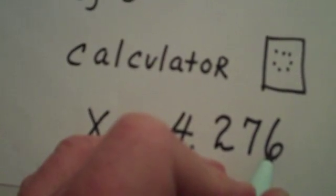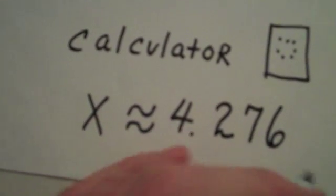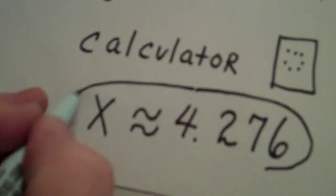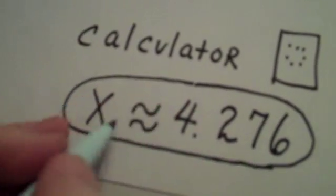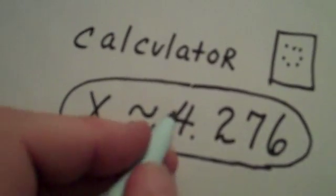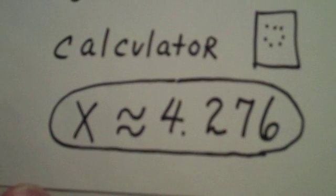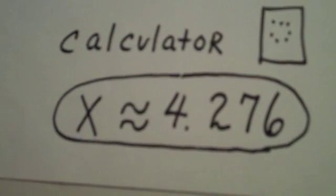And I did look to the fourth decimal place, but that was just a 2, so I dropped it. My answer is approximately 4.276. And I did this by using, again, remember what's called the change of base formula.